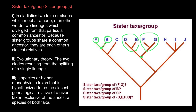Next question: what is the sister taxa group of C? Let's circle C in a different color. If we go down, we find the most recent common ancestor is shared with the clade that includes species A and B. So that clade is going to be the sister clade of taxon C, or we can say that taxon C is the sister taxon of the clade which includes species A and B.